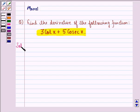Let us start with the solution to this question. Here f(x) is given to be 3 cot x plus 5 cosecant x.